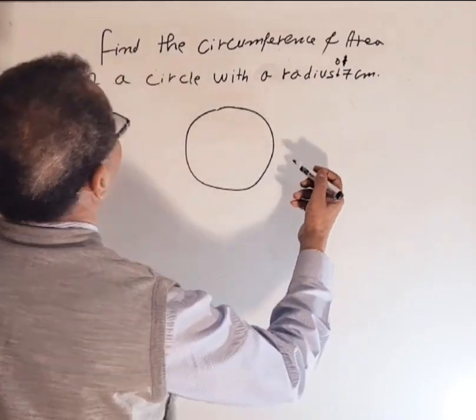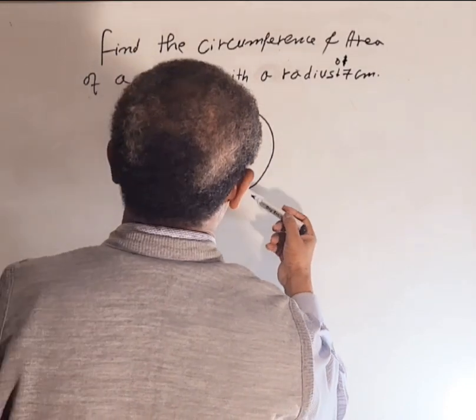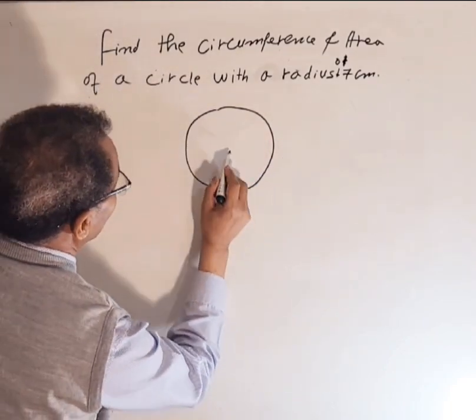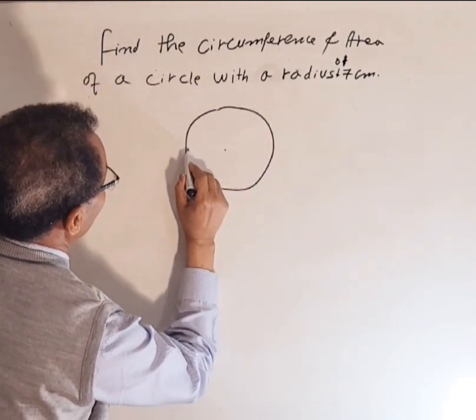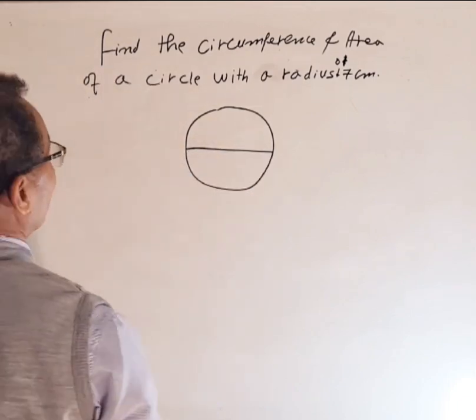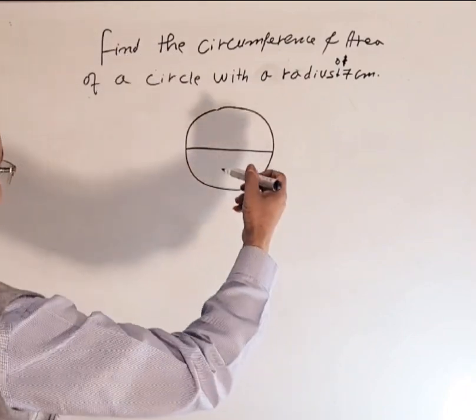In a circle we have diameter, the distance across the circle through its center. So if this is the center, diameter is from this side to this side. We also have a radius, which is a distance from the center to any point of the circle.